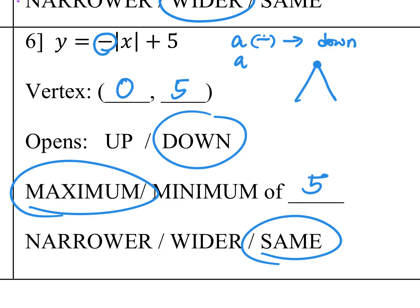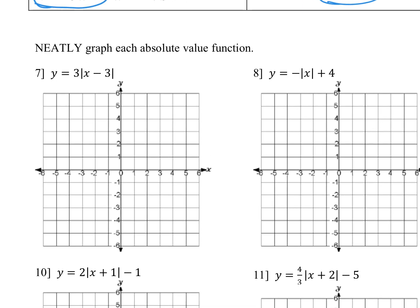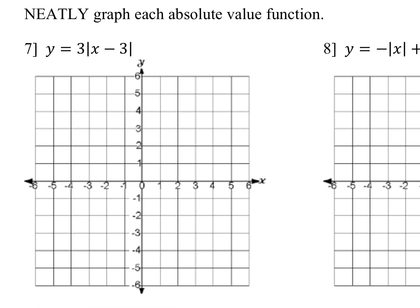Now let's neatly graph each absolute value function. The coefficient A is going to be your slope — just like when you use slope to graph slope-intercept form equations, we're going to use the same idea here.